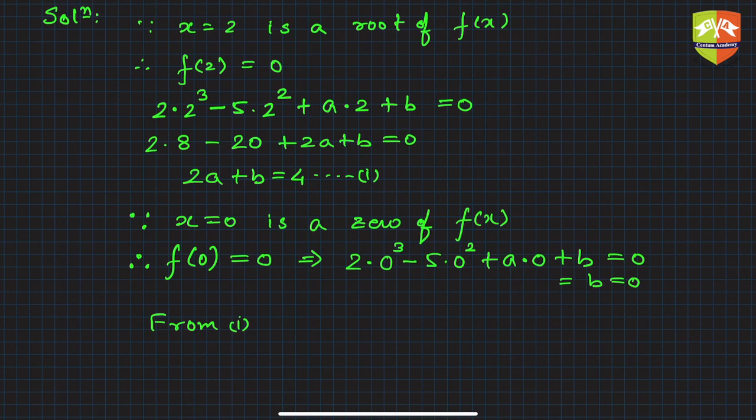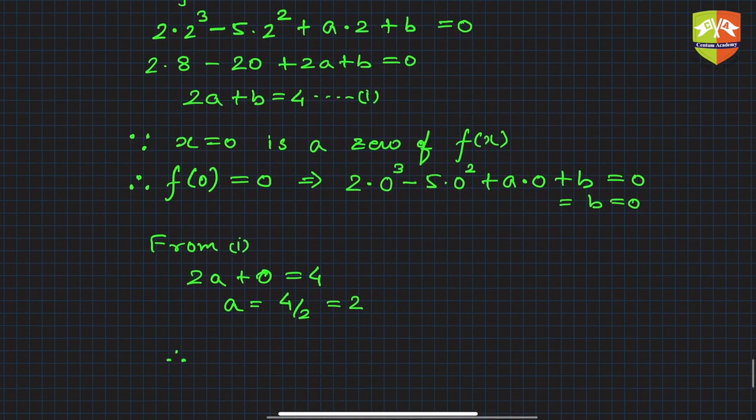If b is 0, what do we see? 2a plus 0 equals 4, so a is equal to 4 upon 2, which is 2. Therefore we get the values of a as 2 and b as 0.